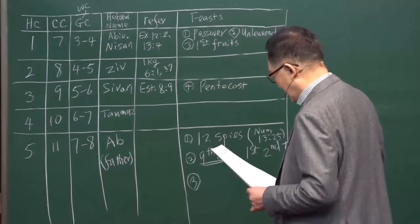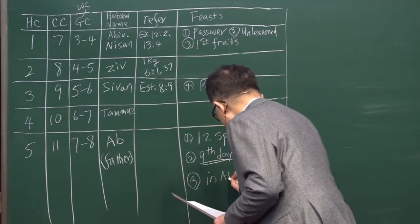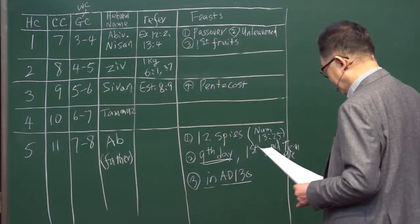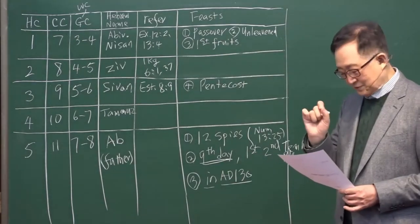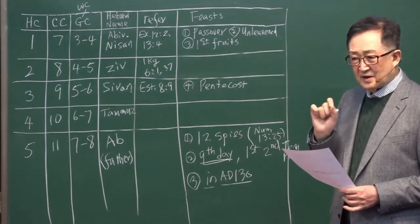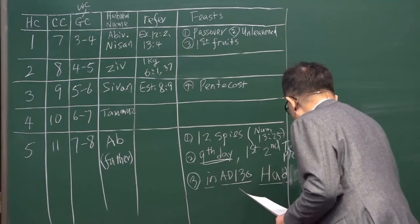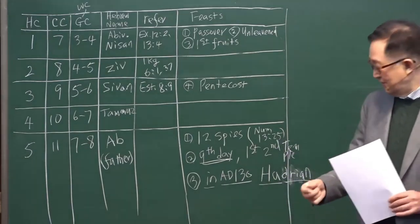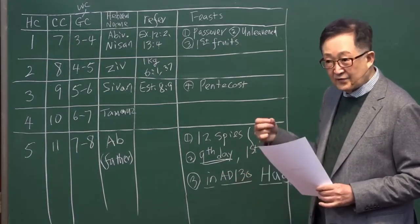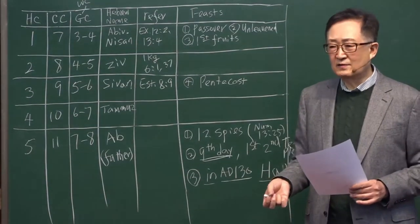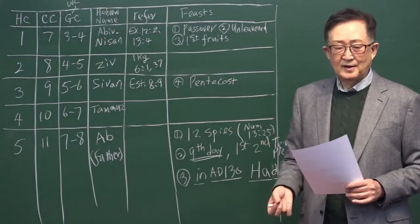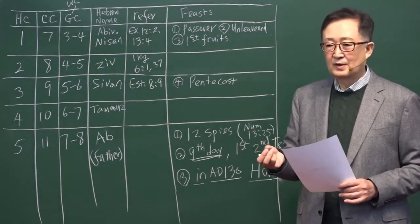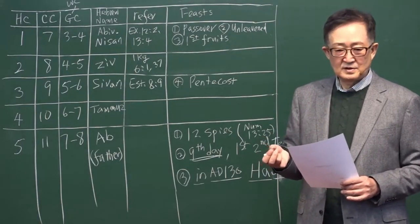So this is Ab ninth. Always, even today, Hebrew people, Jewish people, they consider Ab ninth is their sad day because first and second temple same day. It's not just that happened by chance. God's perfect design. Ab ninth, those two temples destroyed. Now third, in AD 130, Roman king, his name is Hadrian.